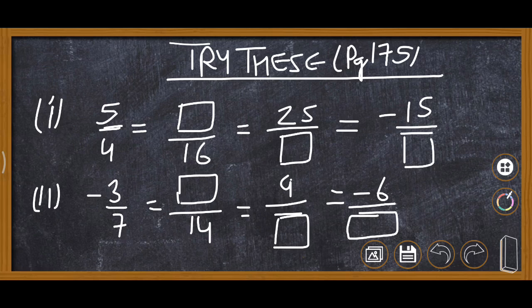So in first question you can see 5 upon 4 and this is 16. So 4 is converted into 16 when it is multiplied by 4. So four fours are 16, so five fours, it will be 20. So here we are required to write 20.